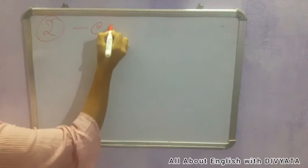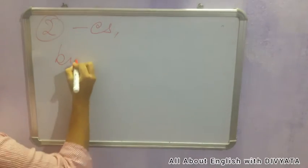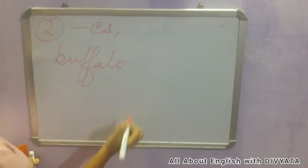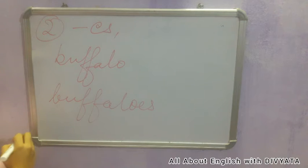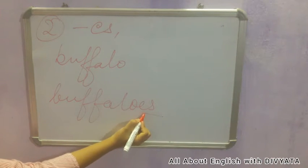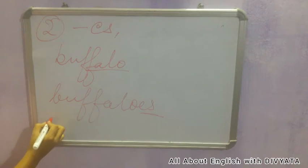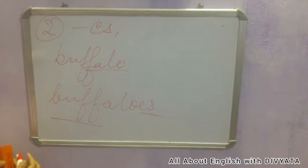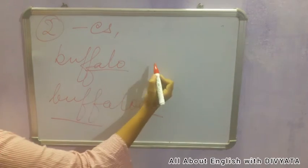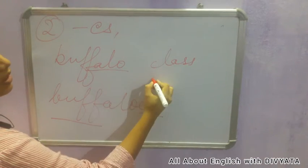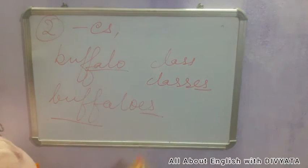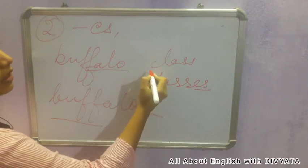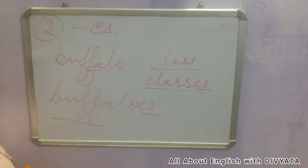The second rule is by adding 'es' to the singular noun. For example, buffalo becomes buffaloes — I added 'es'. Another example: class becomes classes — I added 'es' at the end of the word. Class is a singular noun and classes is a plural noun, formed by adding 'es'.